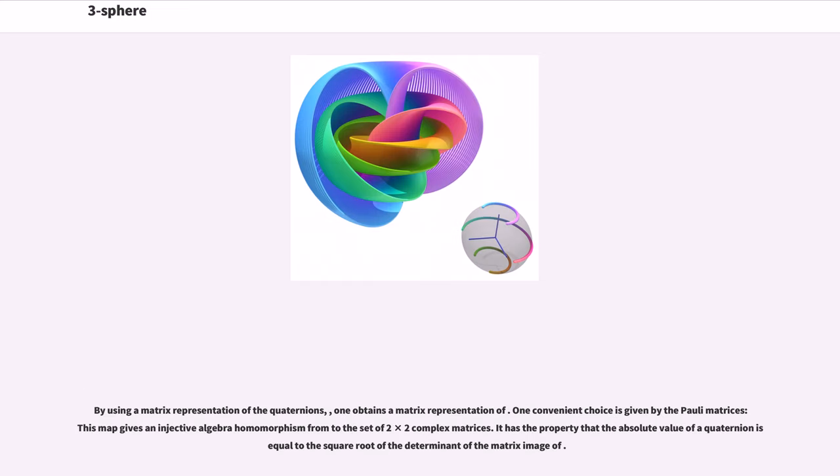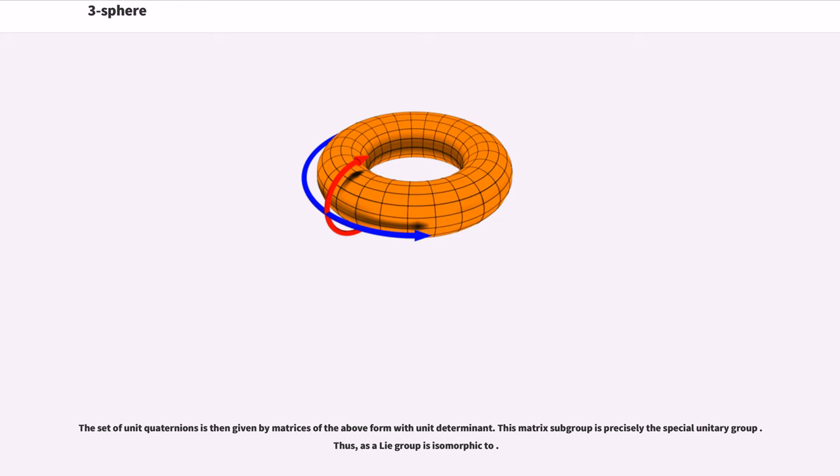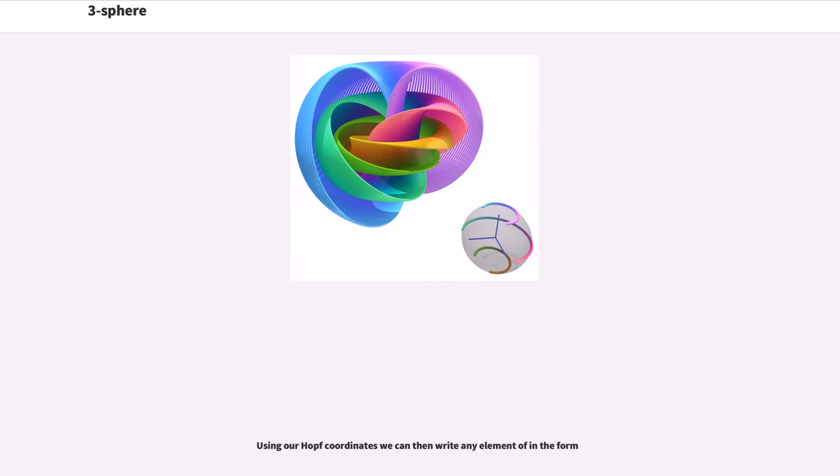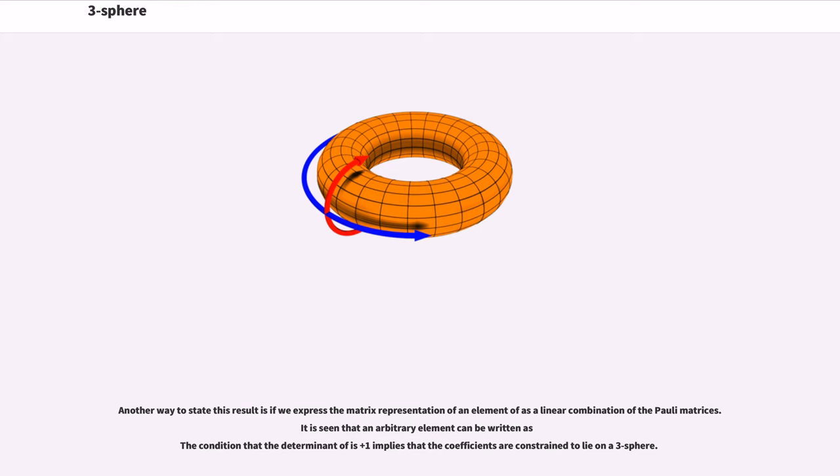By using a matrix representation of the quaternions, one obtains a matrix representation of. One convenient choice is given by the Pauli matrices. This map gives an injective algebra homomorphism from to the set of 2 times 2 complex matrices. It has the property that the absolute value of a quaternion is equal to the square root of the determinant of the matrix image of. The set of unit quaternions is then given by matrices of the above form with unit determinant. This matrix subgroup is precisely the special unitary group. Thus, as a Lie group is isomorphic to. Using our Hopf coordinates we can then write any element of in the form. Another way to state this result is if we express the matrix representation of an element of as a linear combination of the Pauli matrices. It is seen that an arbitrary element can be written as the condition that the determinant is plus one implies that the coefficients are constrained to lie on a three-sphere.